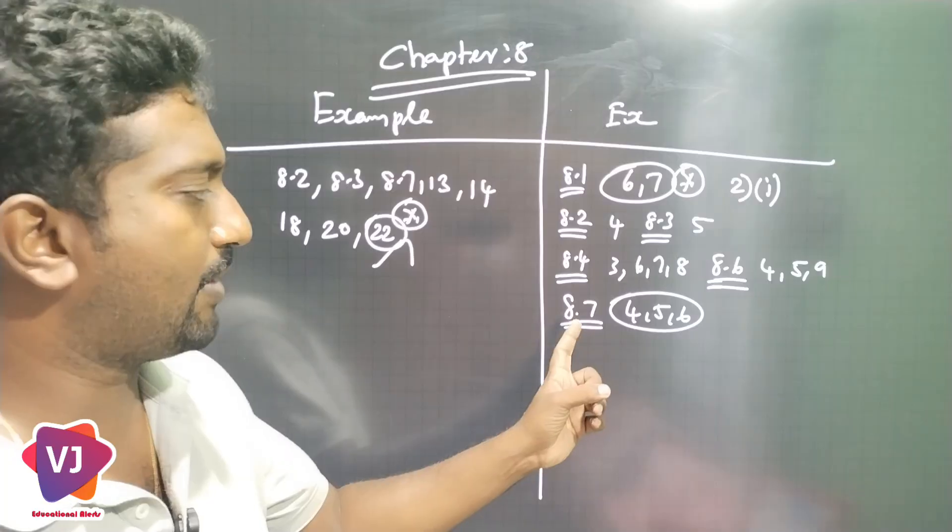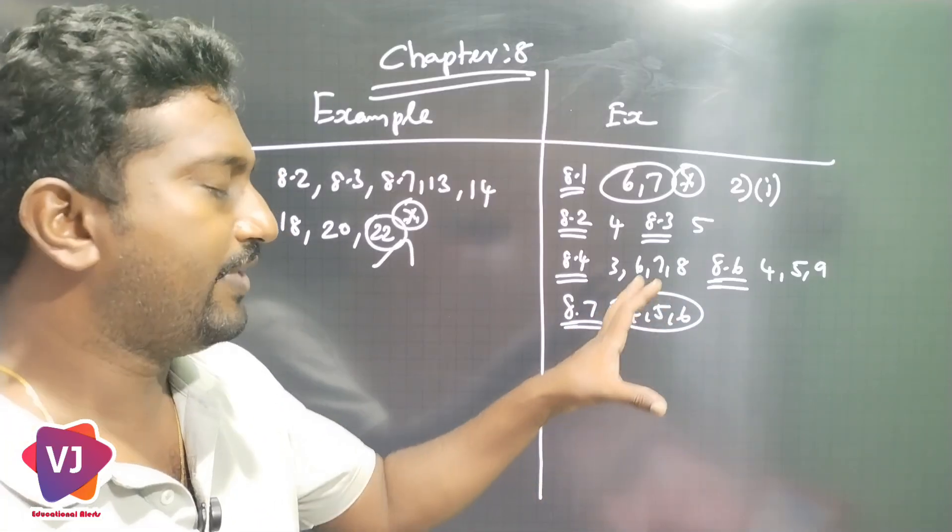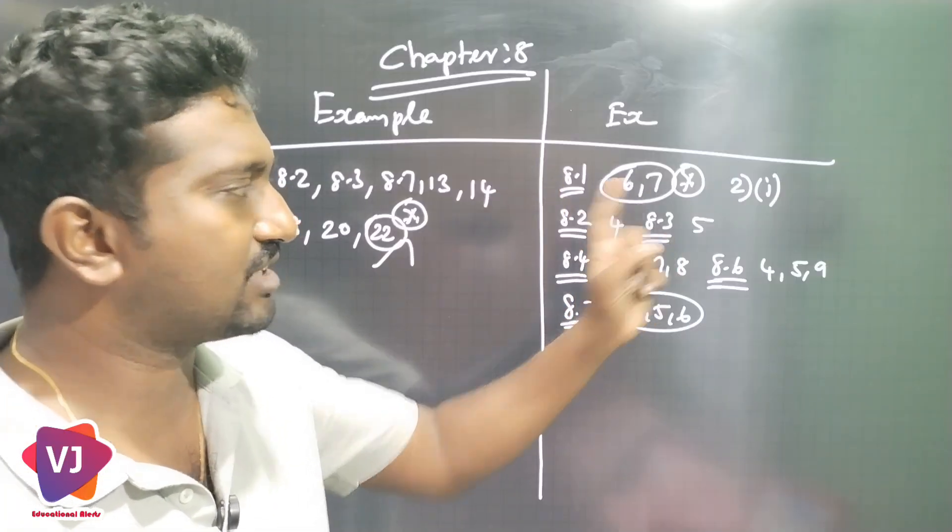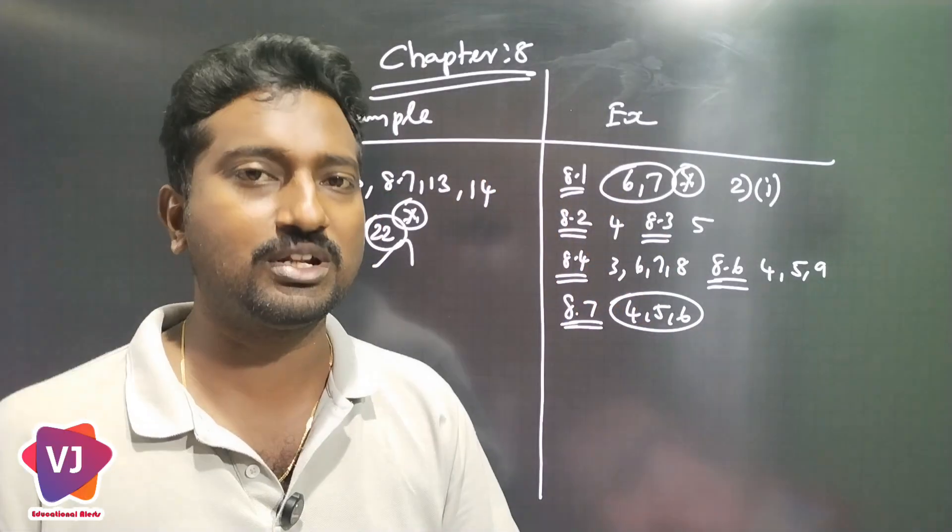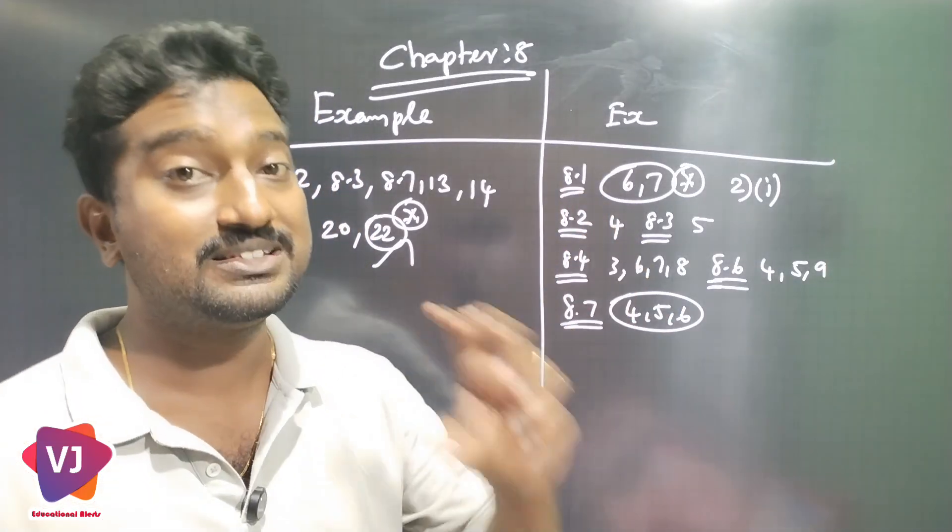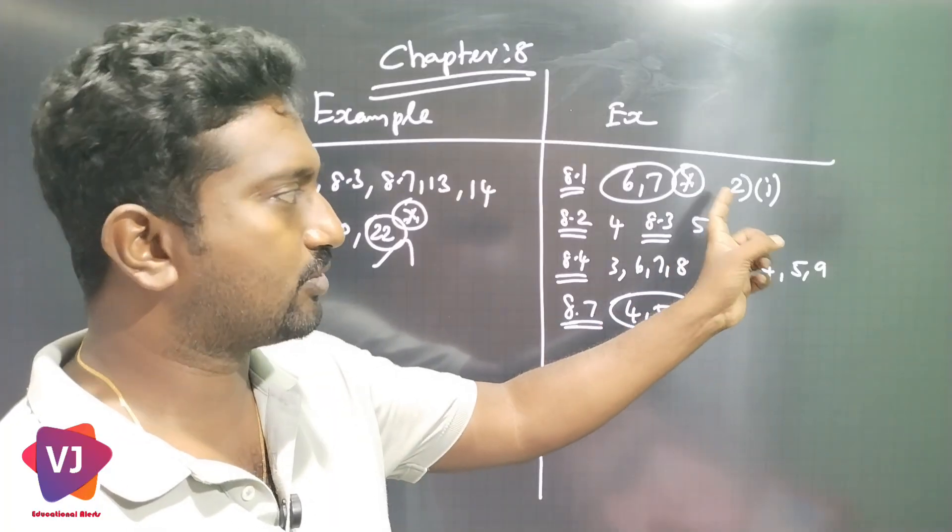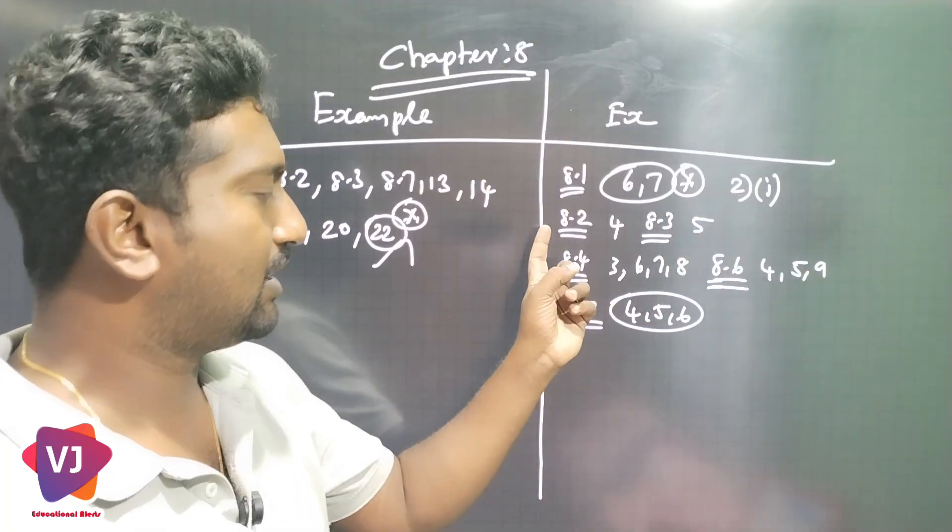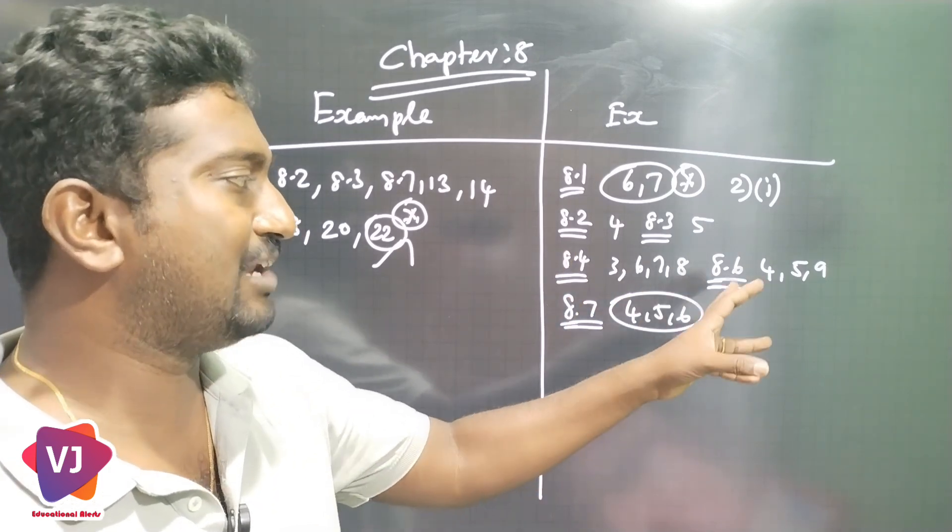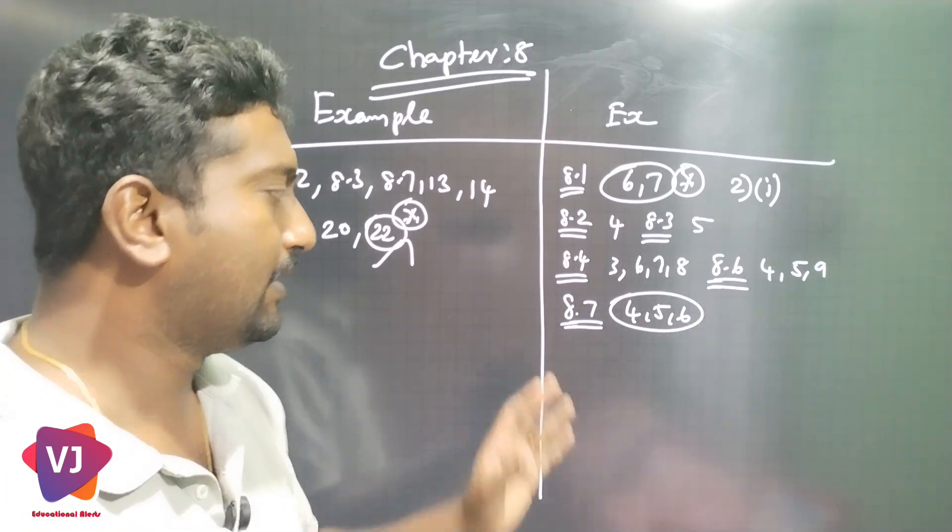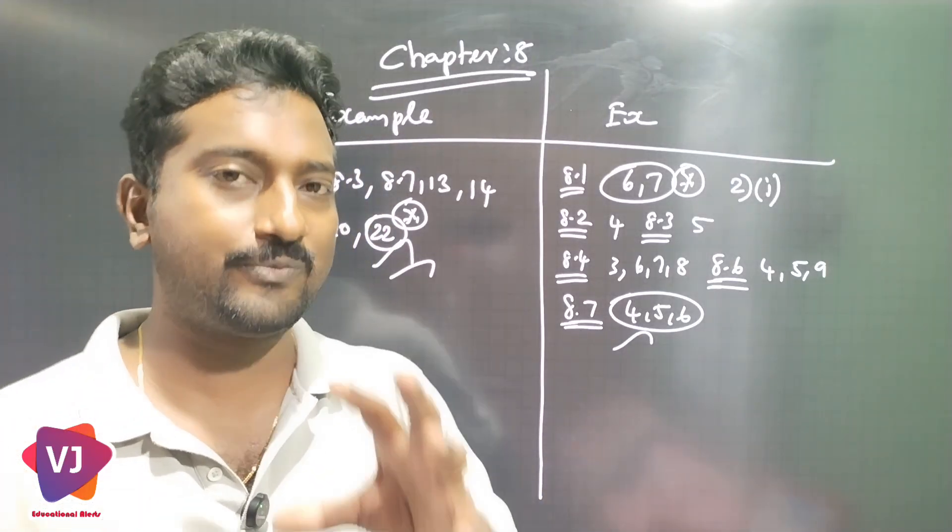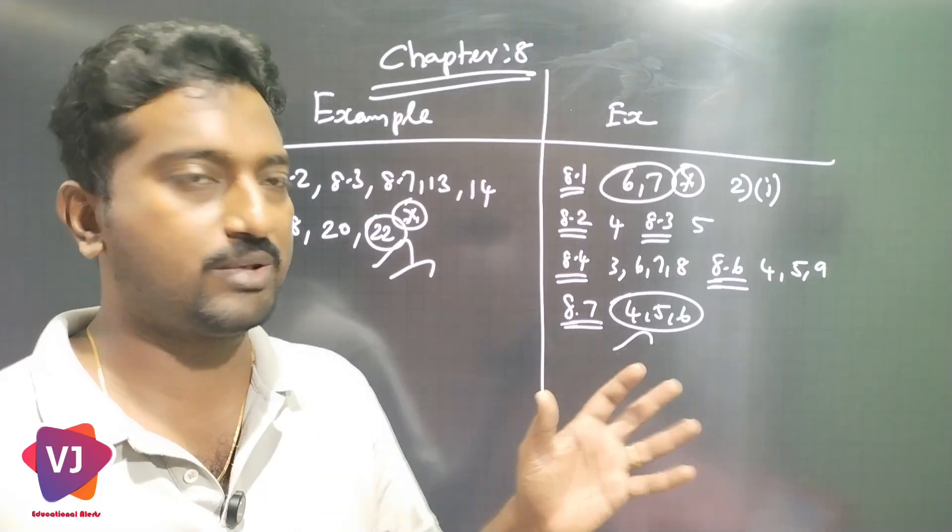Round circle is 8.7456, it is a 5 mark question in exercises. Exercises 8.1 is 6 and 7 questions. 8.2 is 4th sum, 8.3 is 10th sum, 8.4 is 3, 6, 7, 8. 8.6 is 4, 5, 9. 8.7 is very important. This 3rd sum plus this 1st sum, if you look at the number, there is a 5 mark.